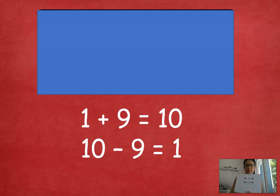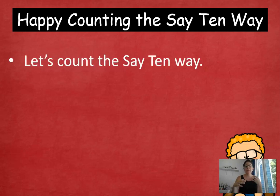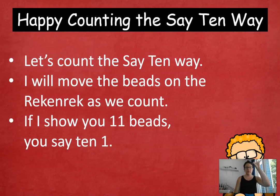Ready? Here are my answers. I saw 1 dot. So 1 plus 9 equals 10, 10 minus 9 equals 1, 10 minus 1 equals 9. Beautiful.